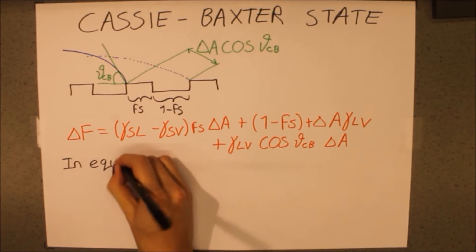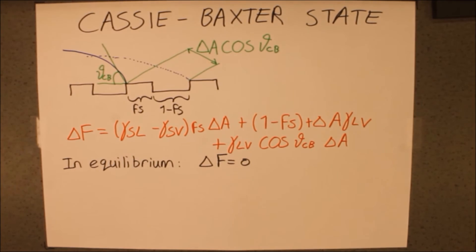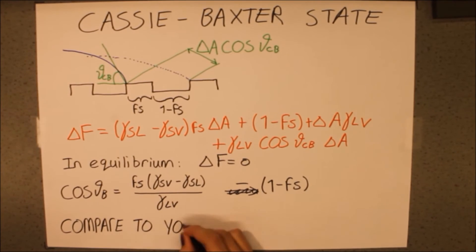Once more investigating the static state by setting the change in free energy to zero and comparing to Jung's equation, we find the Cassie-Baxter formula.